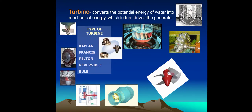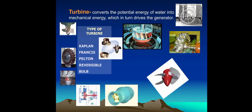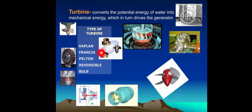Turbine converts the potential energy of water into mechanical energy, which in turn drives the generator. Types of turbines include: Kaplan, Francis, Pelton, Reversible, and Bulb turbines.